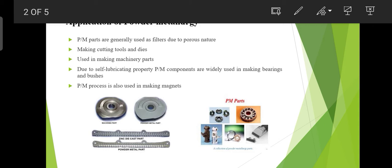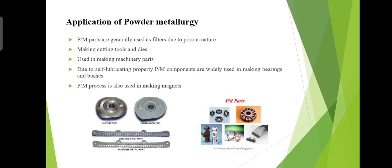In electronic industries, powder metallurgy is used for magnetic devices, magnets, soft magnetic cores, and batteries. Medical and dental industries also use powder metallurgy products. It is also used in aerospace industries.